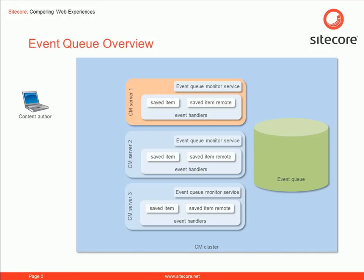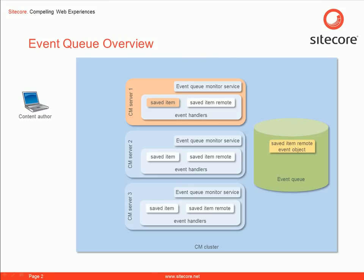An event handler for the Saved Item event creates an instance of a remote event. This remote event is passed to the Event Queue, which records the remote event along with the name of the server that created the event.